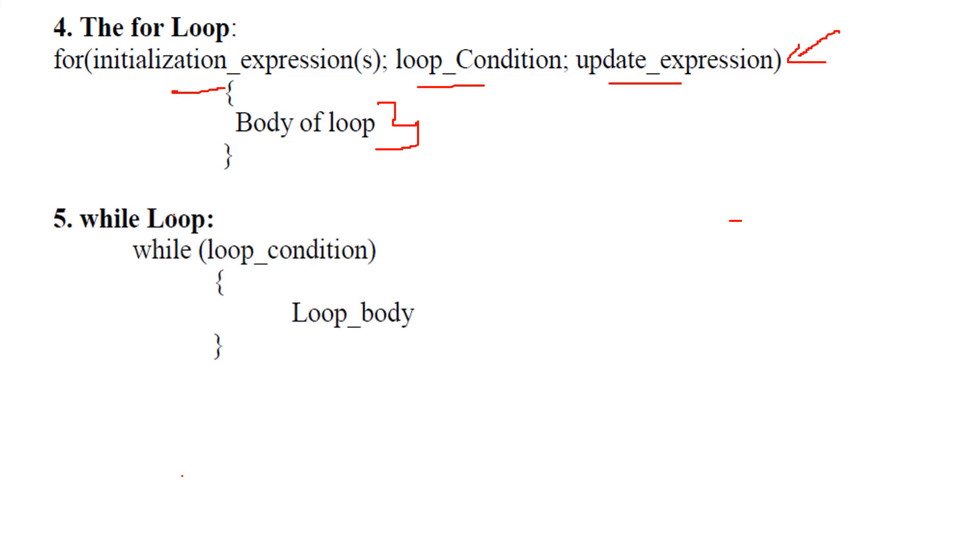Then we have while loop. While loop again is the entry control loop and we have the loop condition here, loop body. This initialization has to be written above this while loop and the update has to be done somewhere inside.